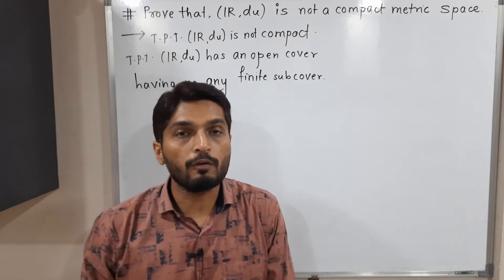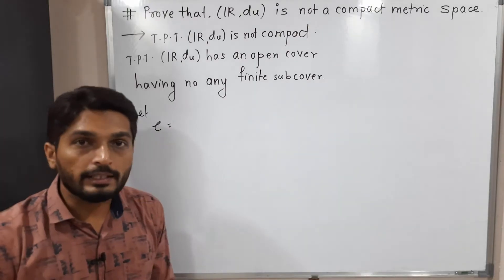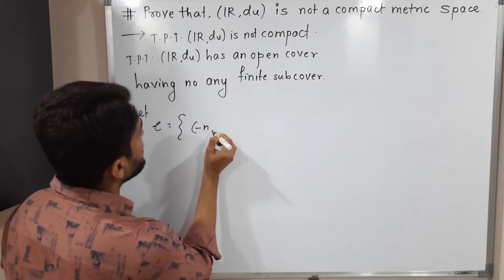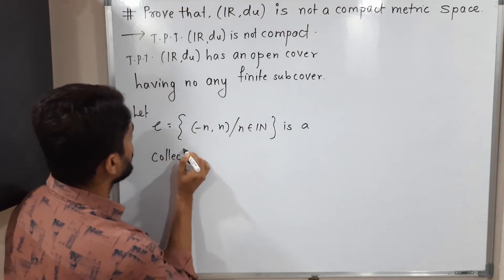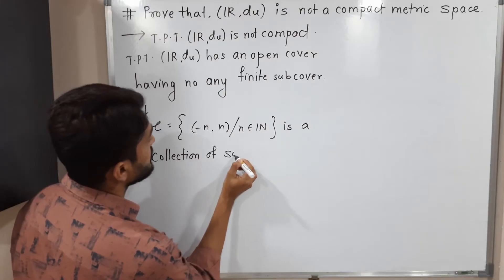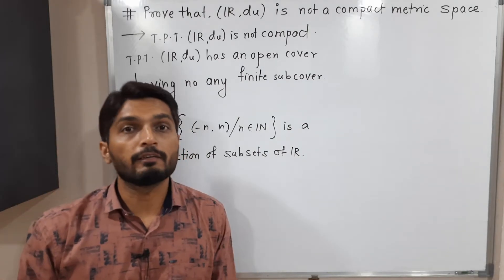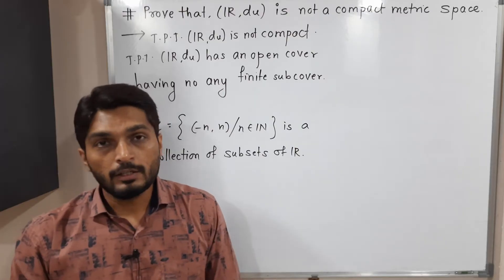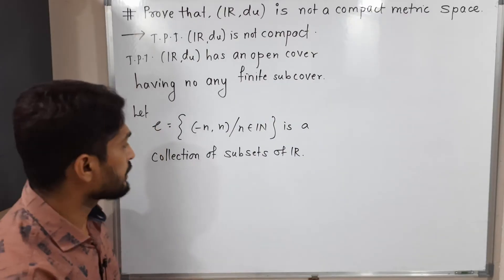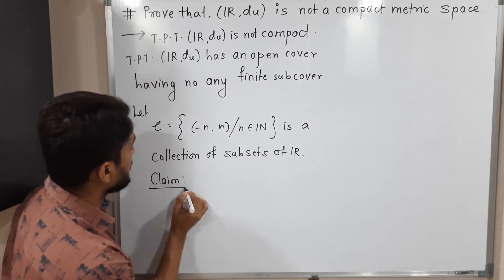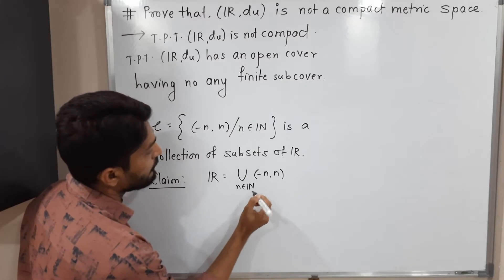So for that, I am going to consider some collection of subsets of ℝ. Let script C be the collection of subsets of ℝ consisting of sets of the form (-n, n) for n belonging to the set of natural numbers. So now our target is to prove that this is an open cover of ℝ. My claim is that ℝ equals the union of (-n, n) for n ∈ ℕ.